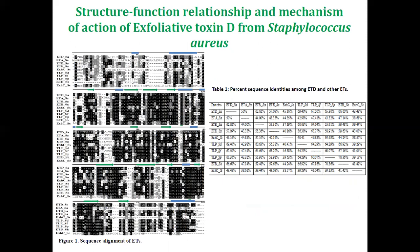First, we performed sequence alignment of various Exfoliative Toxins from Staphylococcus aureus and other species. They show a high degree of identity with one another, with identity ranging from 50% to 70%, although toxins from other species have identity less than 42%.